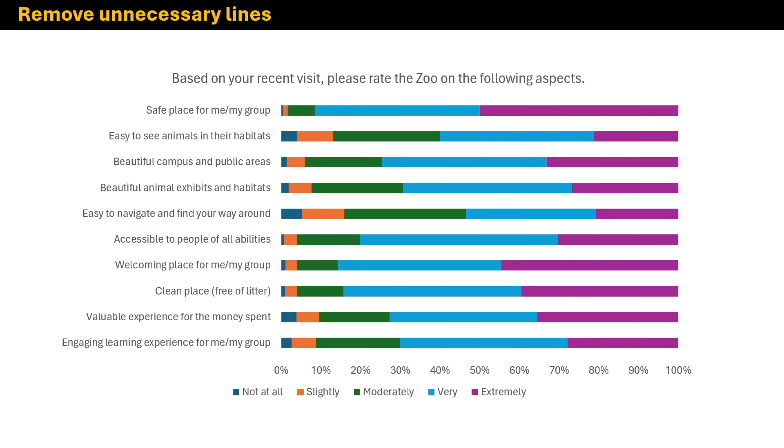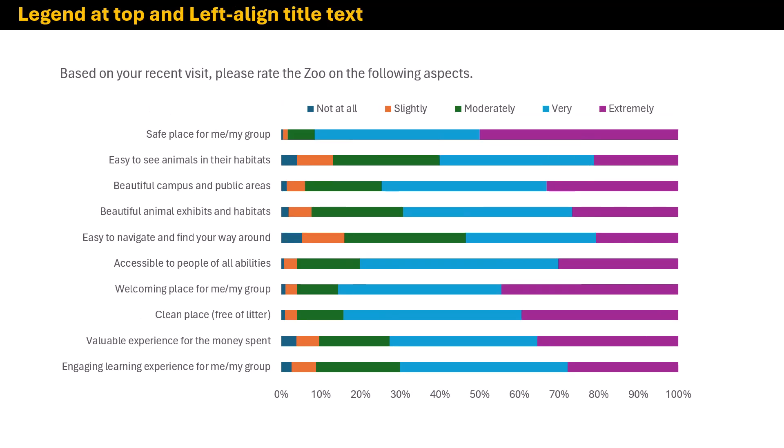The first thing we're going to do is remove those unnecessary lines. We don't need the gridlines in this case, and I don't want the chart border, so we're going to remove that. I also removed the y-axis line here — we don't need it right now, though we might add it back in later.